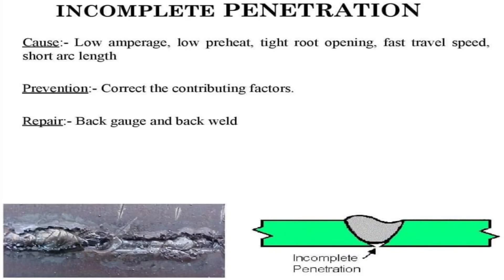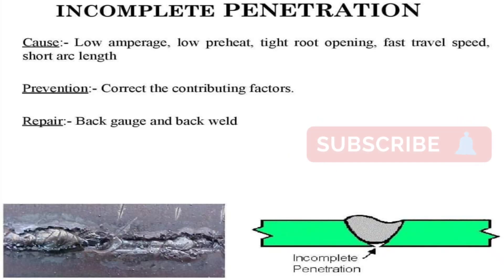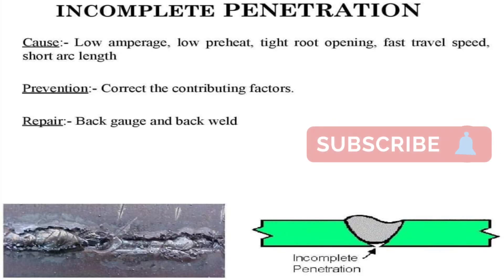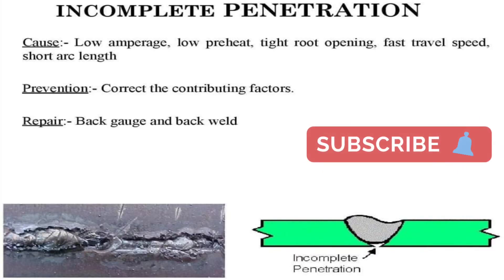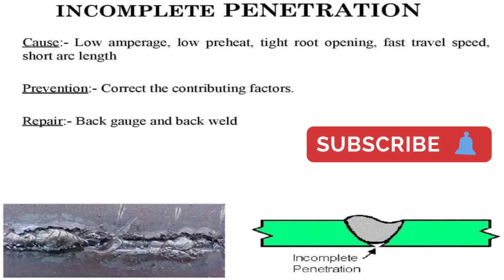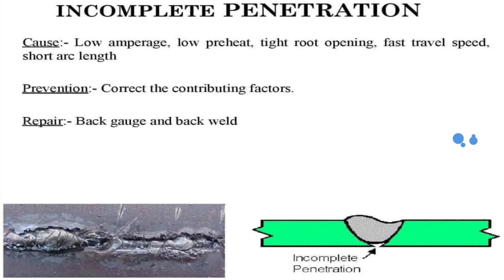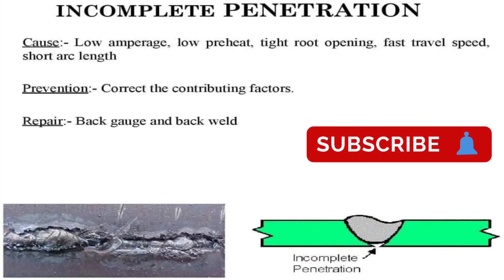Incomplete penetration occurs when the root of the weld bead does not reach the root of the joint to weld the opposite surface in the part. To correct this discontinuity, you can increase the current, decrease the welding speed, or change the joint geometry. Incomplete penetration happens when the metal groove is not entirely filled, meaning the weld metal does not fully spread through the joint thickness. It is normally caused by too much space between the metals being welded, using a very low ampere setting where the current is not strong enough to melt the metal properly, or using a larger diameter electrode. These weld defects can be avoided by ensuring that the joint surface is properly fit, decreasing the arc travel speed, and improving the design of the joint.